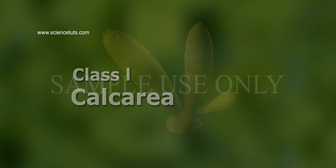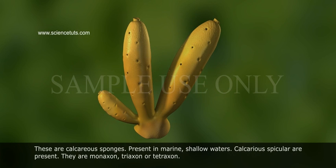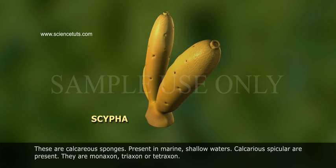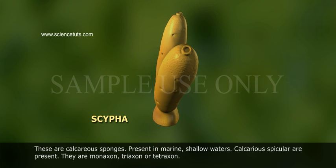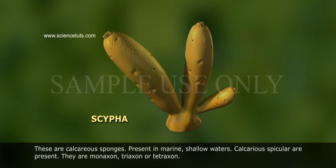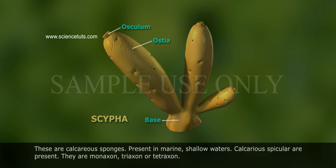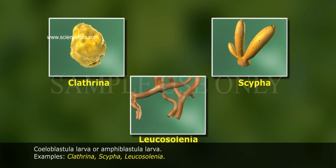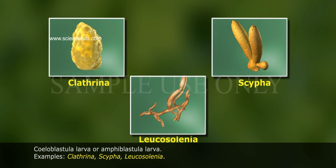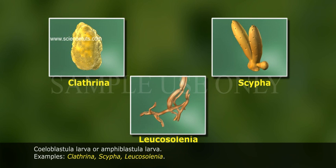Class 1: Calcarea. These are calcareous sponges, present in marine shallow waters. Calcareous spicules are present — Diaxon, Triaxon, and Tetraxon types. Larva: Coeloblastula or Amphiblastula larva. Examples: Clathrina, Sypha, Leucosolenia.